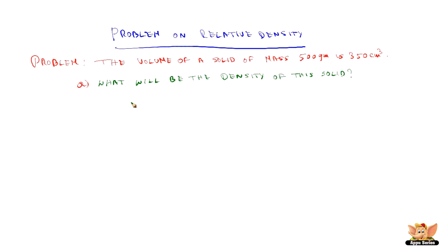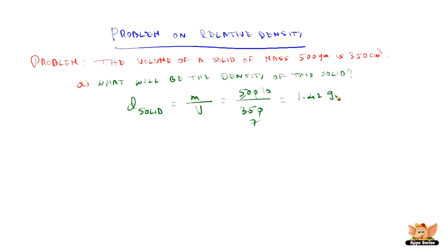We know the density of a solid is given as mass divided by volume. Mass is given as 500 grams and volume is given as 350 cm³. When you calculate, you get 1.42 grams per cm³. This is the density of the solid.